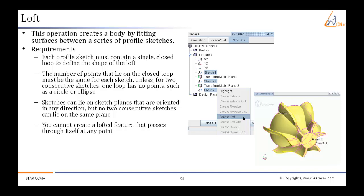Sketches can lie on sketch planes that are oriented in any direction. But no two consecutive sketches can lie on the same plane. You cannot create a lofted feature that passes through itself at any point. Usually, we should avoid a drastic change in the cross section of the sketches used for loft.